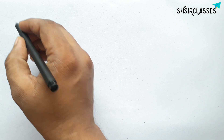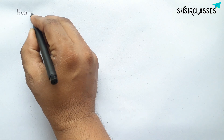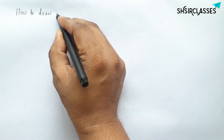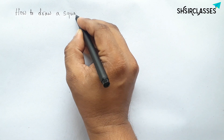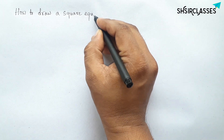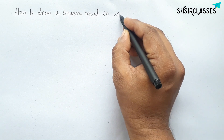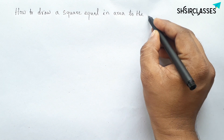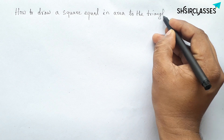Hi everyone, welcome to Essay Share Classes. Today in this video, we will learn how to draw a square whose area is equal to the area of a given triangle in an easy way. Please watch the video till the end.